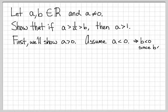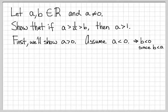We'll prove a is greater than 0 via contradiction. Assume a is less than 0. Well, if a is less than 0, then b also has to be less than 0, because one of our original assumptions was that b is less than a. Reading our original inequality right to left, b is less than a. So if a is less than 0, then b is less than 0 by our starting assumption — both a and b are negative.